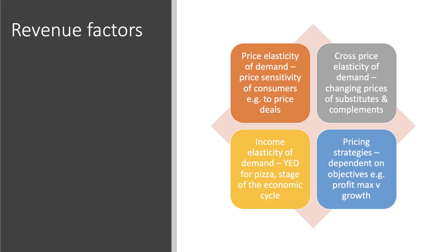Cross-price elasticity is also relevant - the extent to which changing prices of substitutes, for example prices of supermarket pizza or prices charged by rival delivery companies, impacts on Domino's pricing strategy. The price of complements and product bundling is a good example, where they bundle in cheap cokes and garlic breads. Also think about the income elasticity of demand for Domino's pizza - to what extent is it a normal good with positive income elasticity, and does demand rise or fall depending on the stage of the economic cycle?